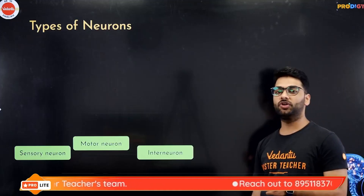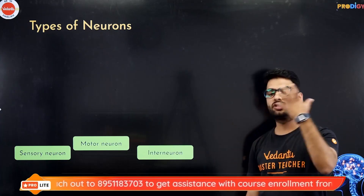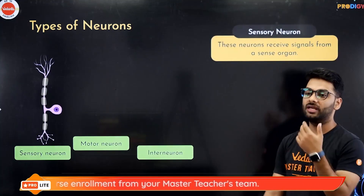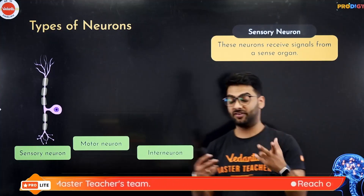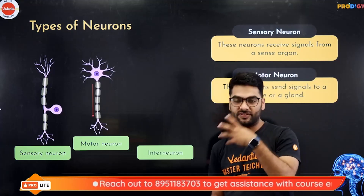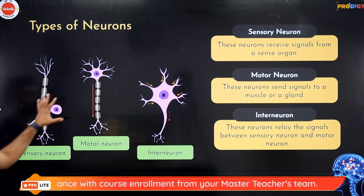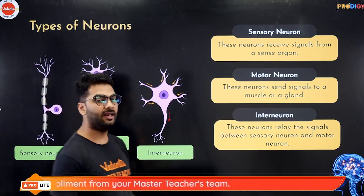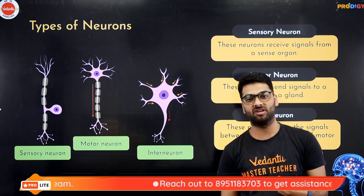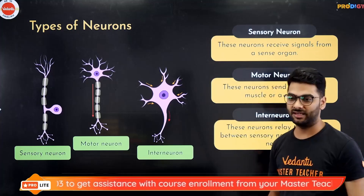There are three types of neurons: the sensory neuron, interneuron, and motor neuron. Sensory neurons receive signals from the sense organs and send them to the central nervous system. The sensory neuron gives the signal to the interneuron, the interneuron passes it to the motor neuron, and the motor neuron acts — causing a reaction. So the pathway is: sensory to interneuron, interneuron to motor, motor to reaction. For example, if your friend pricks you with a pin, the sensory neuron takes the signal to the interneuron in the CNS, which passes it to the motor neuron, which signals the muscle cell and you take the required action.